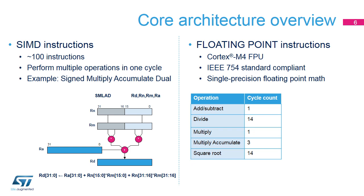The Cortex-M4 core embedded in the STM32MP1 microprocessor implements the optional single-precision floating-point unit, which is compatible with the IEEE 754 standard. Add, subtract, and multiply instructions take one clock to execute. Multiply-accumulate instruction takes three clocks. Divide and square root instructions take 14 clocks.